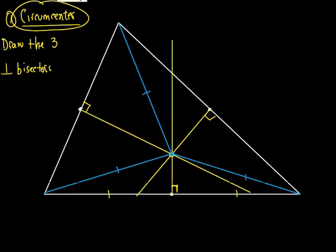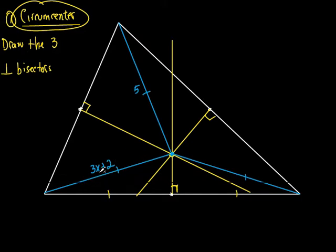What kind of question could they give you for the circumcenter? They could say this blue line is 5, and ask you to find another one — well, it'd be 5 as well, because it's equidistant. Or they might make it tougher and say this is 3x plus 2 or something. What do you do to solve for x? Set them equal to each other — don't just plug in yet. Set these equal to each other, solve for x, then once you solve for x you can plug it in. You already know the distances are equal; it's just a matter of setting them equal and solving for x.